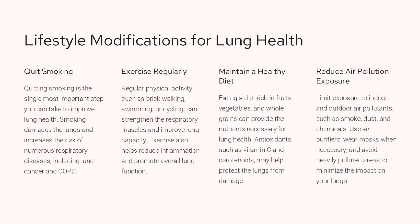Quitting smoking is the single most important step to improve lung health, as it reduces the damage caused by smoking. Regular exercise like brisk walking, swimming, or cycling can strengthen the respiratory muscles and improve lung capacity. A healthy diet rich in fruits, vegetables, and whole grains provides the necessary nutrients to support lung health, and antioxidants may help protect the lungs. Limiting exposure to air pollutants such as smoke, dust, and chemicals by using air purifiers, wearing masks, and avoiding heavily polluted areas can minimize the impact on the lungs.